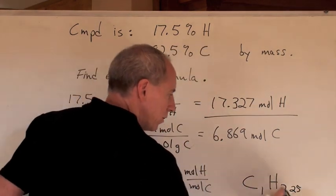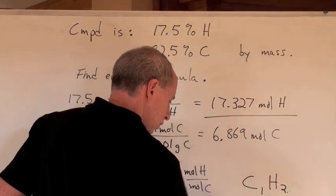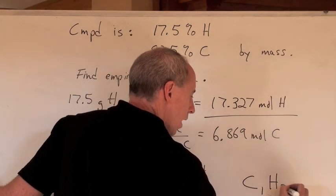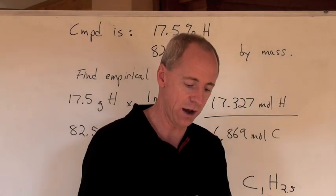But here's the thing. For this one, it was a simple 2.5 to 1 ratio, and we got this formula, empirical formula, C2H5.